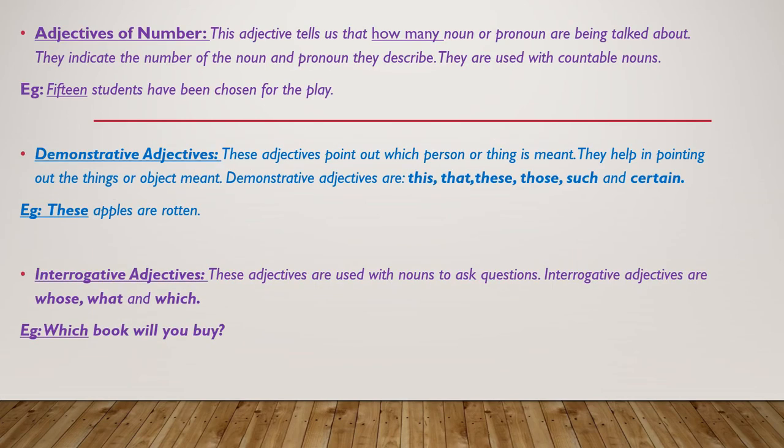Then comes adjectives of number. This adjective tells us how many nouns or pronouns are being talked about. They indicate the number of the noun or pronoun they describe and are used with countable nouns. Of course, if these are countable nouns, we can count them, and if we can count them, we need a number for that. For example: 15 students have been chosen for the play. I have eaten three burgers. I want two more pencils, etc.